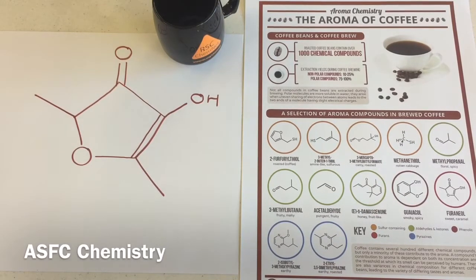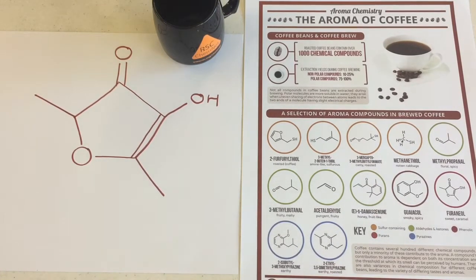Hi everyone and welcome back to ASFC Chemistry where I'm going to take you through the A2 content relevant for the OCR A specification for what is a chiral centre and optical isomerism as a type of stereoisomerism.